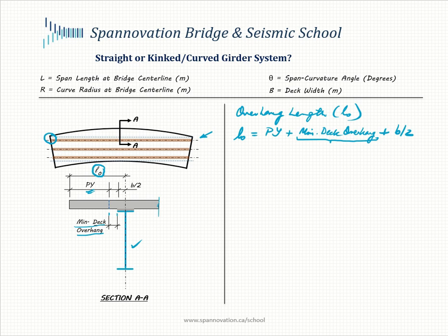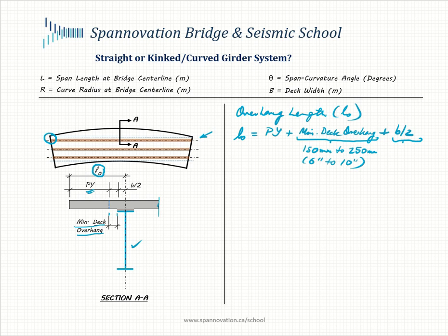The minimum deck overhang may be specified in your jurisdiction's bridge design manual. Typically for steel plate girder bridges it ranges from 150 mm to 250 mm. In this example, the top flange width is 500 mm, so b/2 equals 250 mm. Using 250 mm for the minimum deck overhang, L0 equals PY plus 0.25 m plus 0.25 m, giving L0 equals PY plus 0.5 meters.